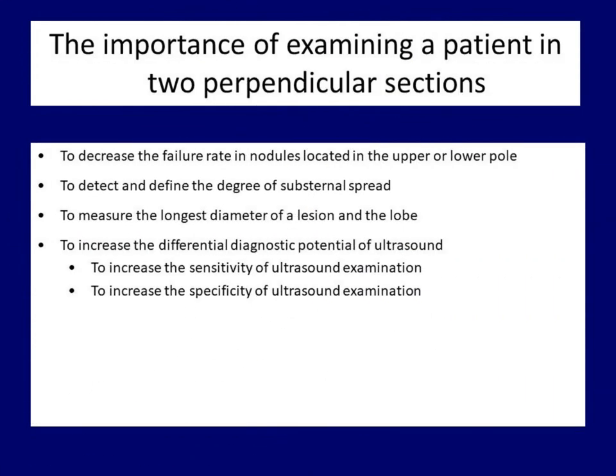We have to perform an ultrasound examination compulsorily in two perpendicular sections. In horizontal scanning, we start with the investigation above the thyroid and move downward with the transducer. In an enlarged thyroid, we have to repeat this procedure several times in order to visualize the whole thyroid. Thereafter, we rotate the probe squarely and move from lateral to medial.